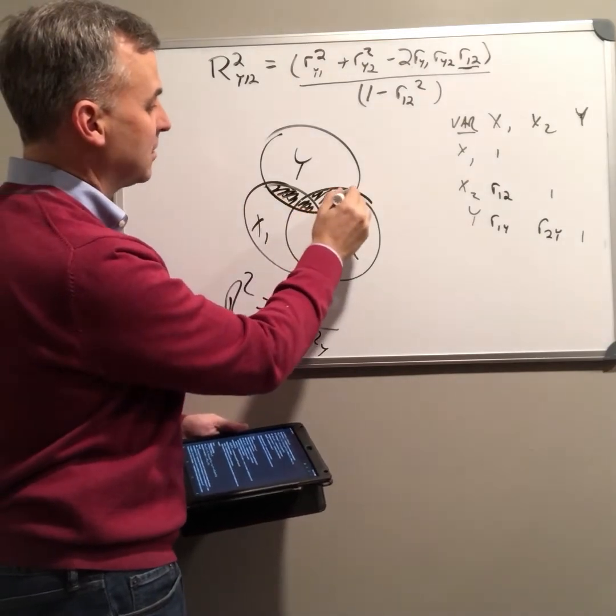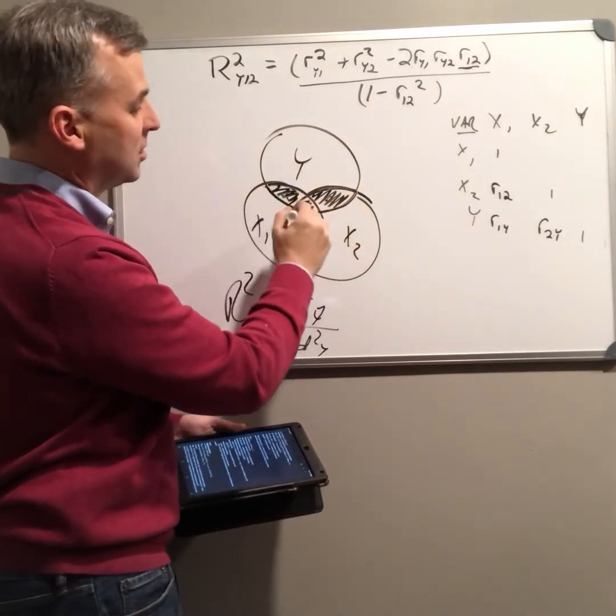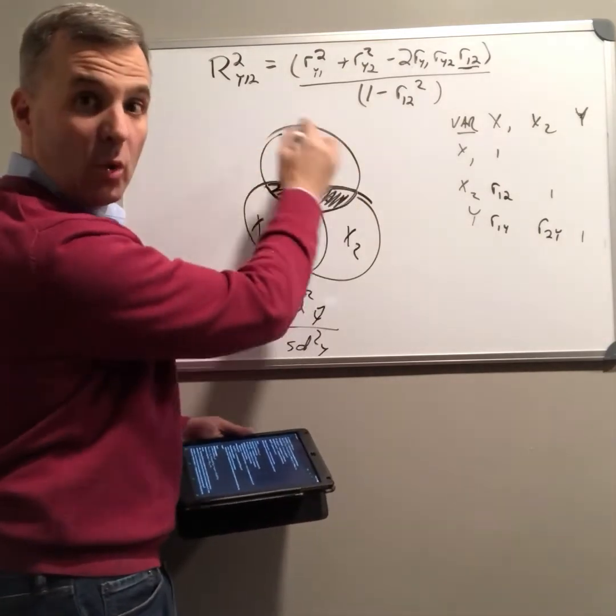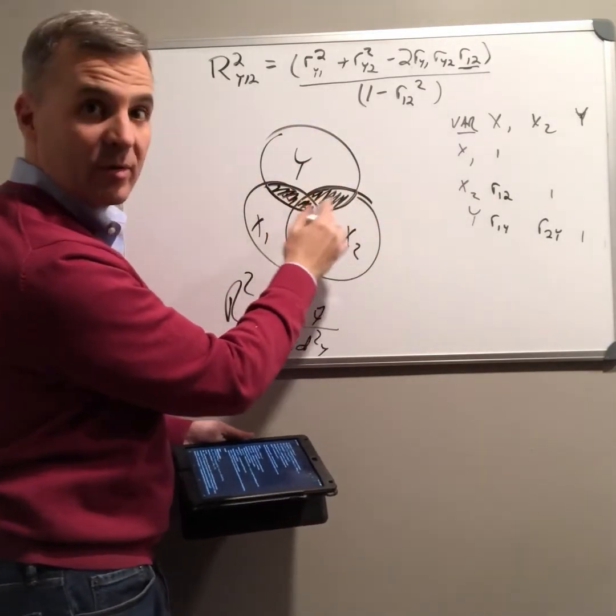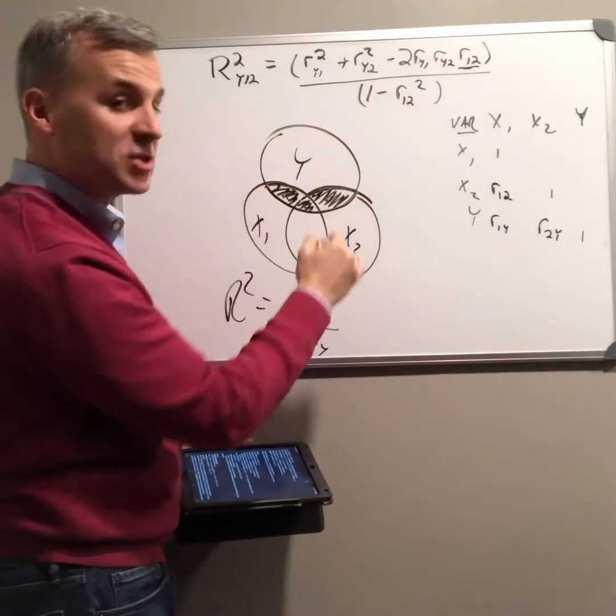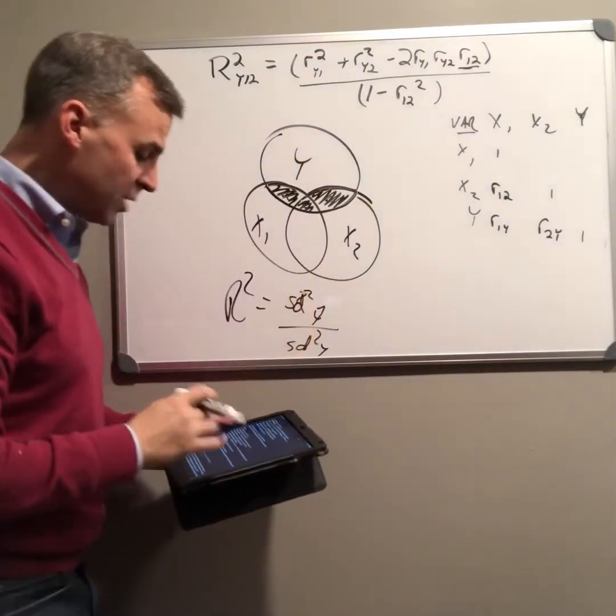This is the variance explained divided by the total variance. That's r squared. The variance explained by our regression equation over the total variance. So nothing's changed there.